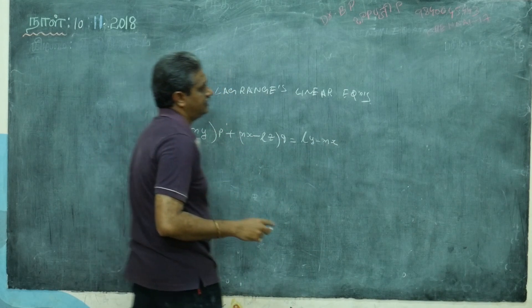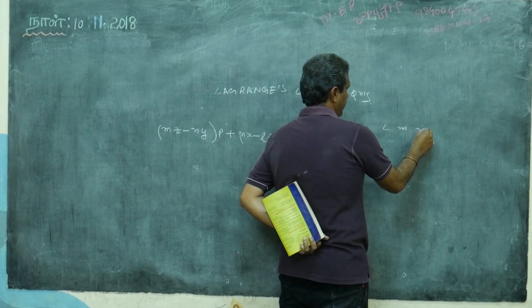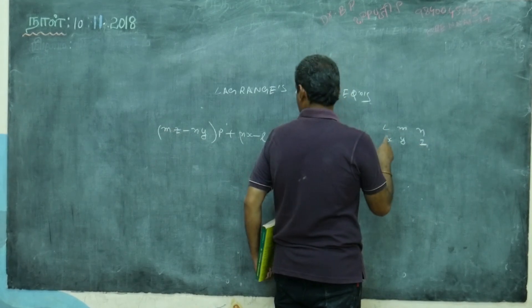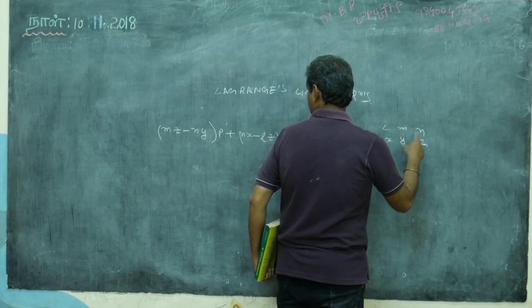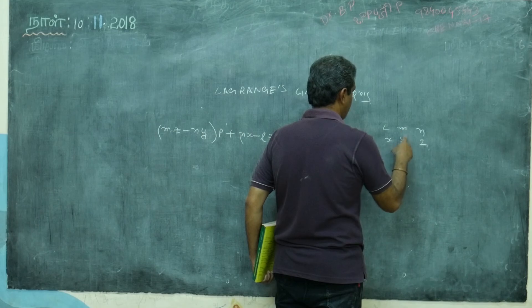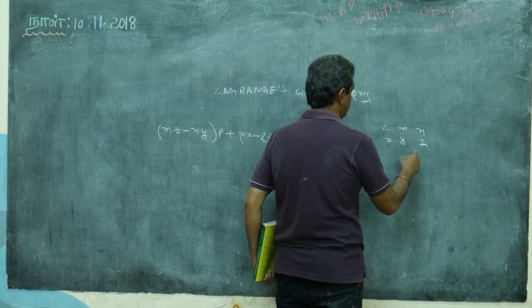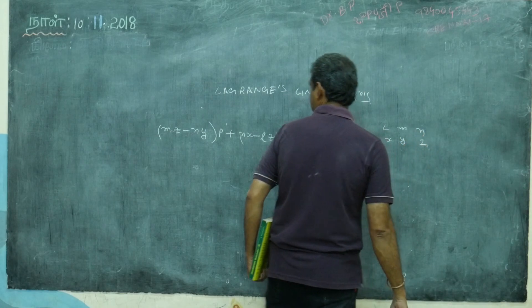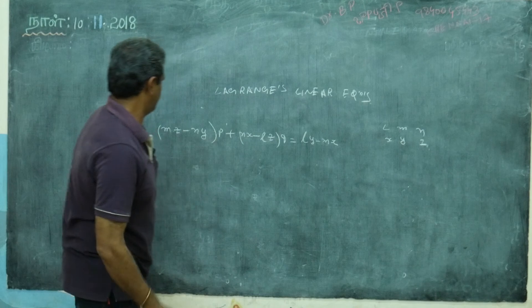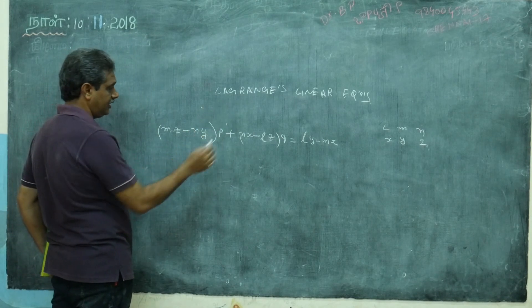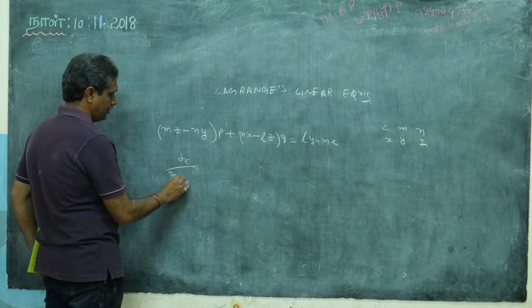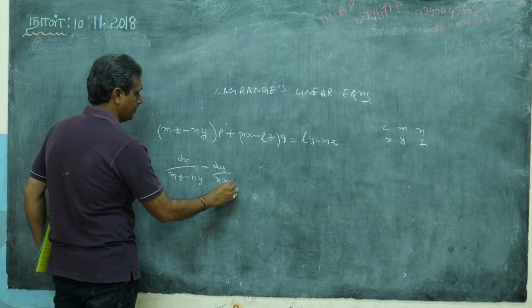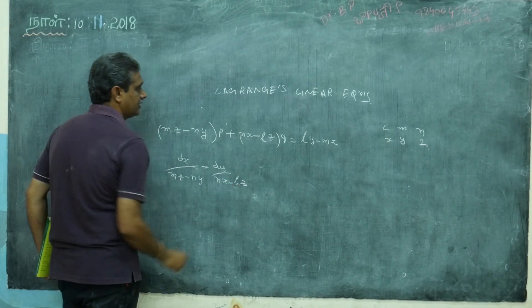Notice the pattern: when l appears, x won't come; mz - ny is there, so when m comes, y won't appear; nx - lz is there, so when n comes, z won't appear. This is the form: dx/(mz-ny) = dy/(nx-lz) = dz/(ly-mx). What will you do? Same story. First, you take multipliers l, m, n.